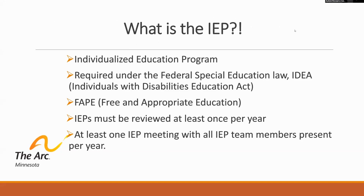The IEP document states the individual student goals for that year, including the support services, assistive technology, and curriculum modifications that must be provided, as well as their class placement. It's required under the federal special education law, IDEA — the Individuals with Disabilities Education Act. Your public school district and area education agency have the responsibility to provide a free and appropriate public education in the least restrictive environment, meaning your child will attend classes, participate in non-academic and extracurricular activities, and receive services with children without disabilities to the maximum extent appropriate. FAPE doesn't mean the same thing for everyone.